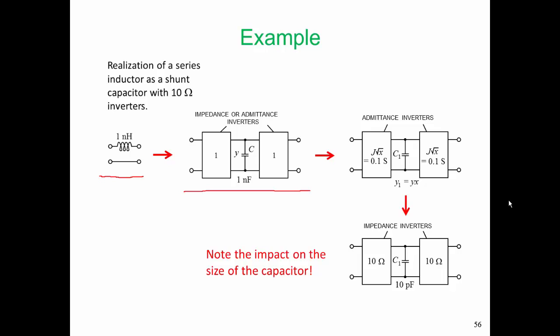so we're just taking our 0.1 Siemens admittance inverters and turning them into 10 ohm impedance inverters, it's exactly the same element. It depends whether we use Siemens or ohms. We see that our capacitor is really 10 picofarads.